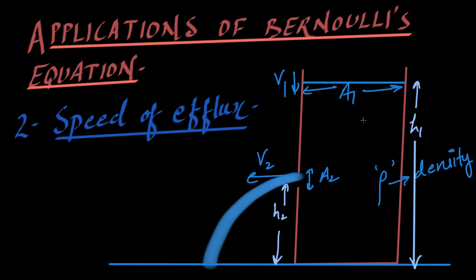As you can imagine, the liquid is going to come out from this hole, and the initial velocity with which it comes out will be horizontal — I have assumed it to be v2. The area of the upper surface of the liquid is a1, and the velocity with which the liquid is going down at that level is v1. There is air all around, so atmospheric pressure is p0. I want to find out the speed with which the liquid is coming out from this hole.